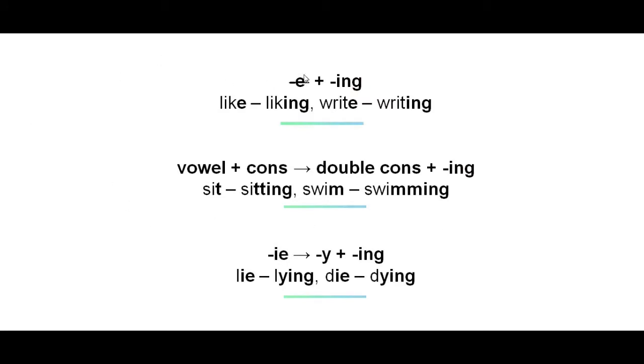When a verb ends in e, we get rid of the e and simply add -ing, as in like, liking, write, writing. And when a verb ends in a vowel plus consonant, we double the consonant and then add -ing, as in sit, sitting, swim, swimming.